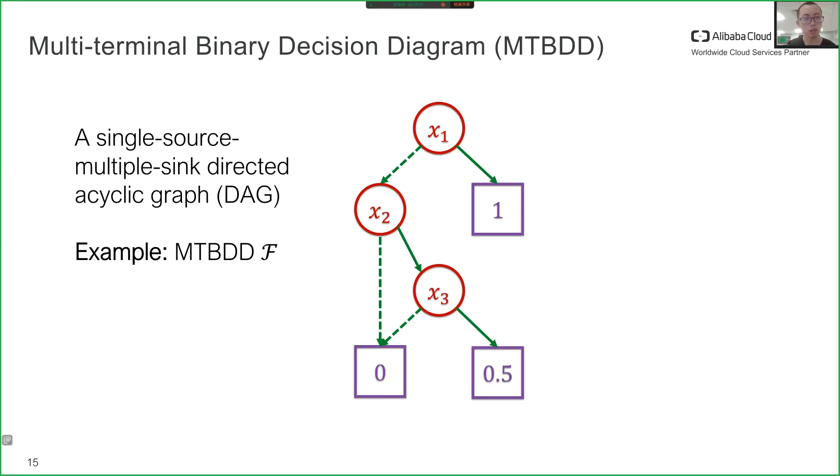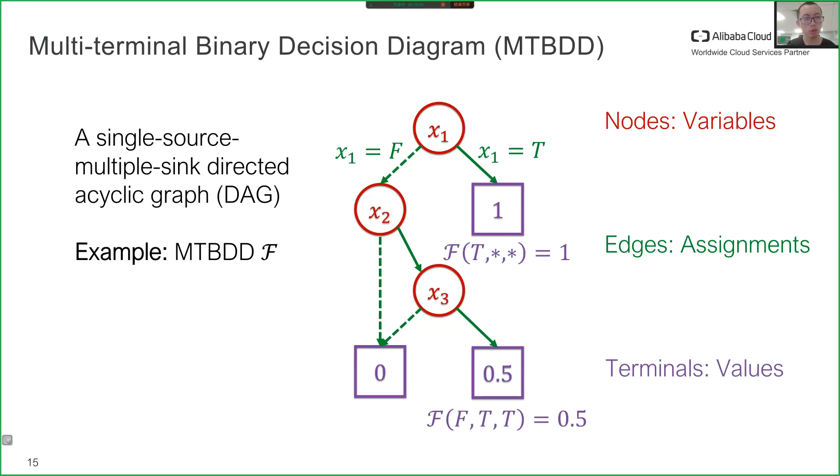MTBDD is a single-source multiple sink directed acyclic graph, where nodes represent boolean variables, edges represent assignments of such variables, and terminals represent the values. Furthermore, we use f at X1 equals false to denote the sub-MTBDD, or the left sub-graph of the X1 node.